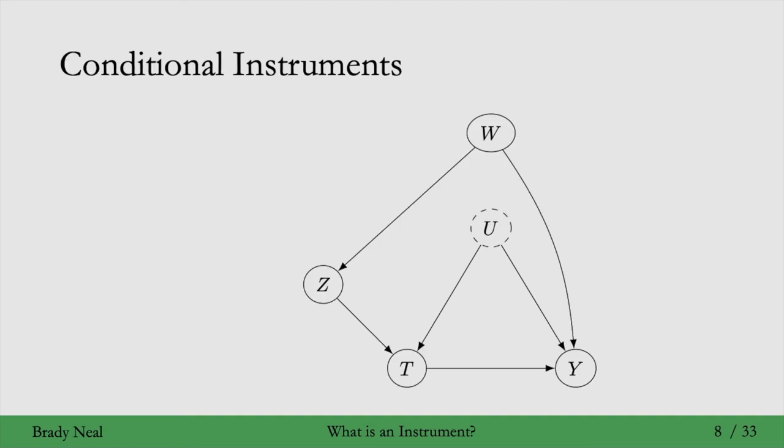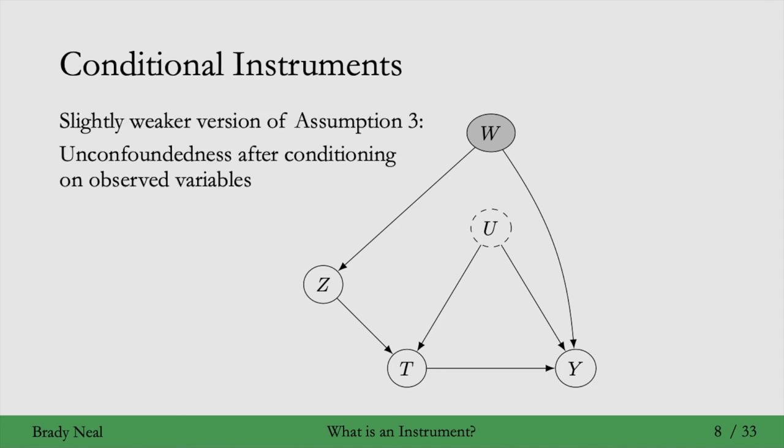And we could have a graph where there is a backdoor path from Z to Y. So here it's Z to W to Y. But because W is observed, we can block that backdoor path by conditioning on it. This gives us a slightly weaker version of assumption 3, where we have unconfoundedness after conditioning on observed variables. And if we have this, we would call Z a conditional instrument.